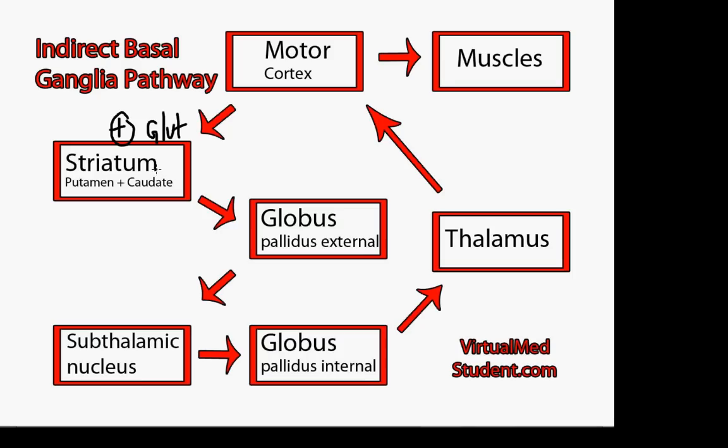The striatum has inhibitory output to the globus pallidus, but in this case the striatum sends an inhibitory message via GABA to a different segment of the globus pallidus known as the external segment. And the role of the external globus pallidus is normally to inhibit another basal ganglia collection of neurons or nuclei known as the subthalamic nucleus.